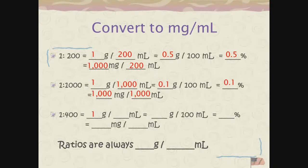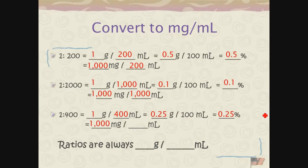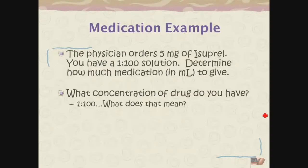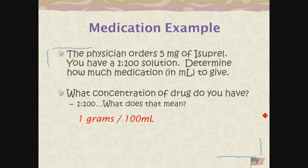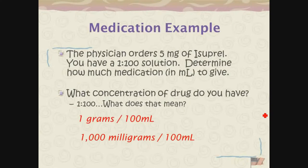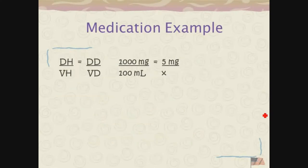Another example: 1 to 400 gives a 0.2% solution, or 1,000 milligrams per 400 milliliters. So ratios are always so many grams per so many milliliters. This order of a 1 to 100 solution means 1 gram in 100 milliliters, or 1,000 milligrams in 100 milliliters, or 10 milligrams per milliliter.